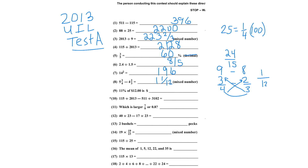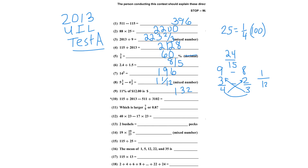Number 9: 11 percent of 12. 11 times 12 is 132, and percent means per hundred, so I divide by 100. That gives 1.32.